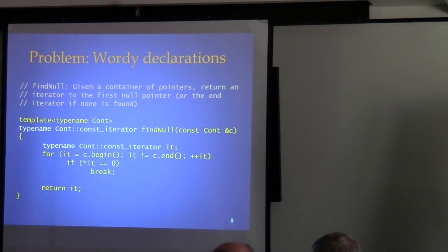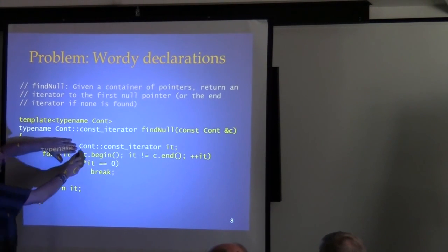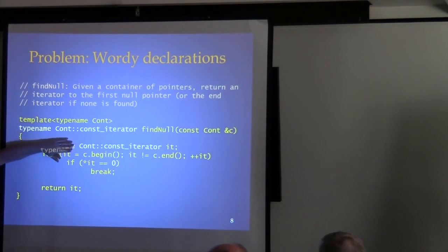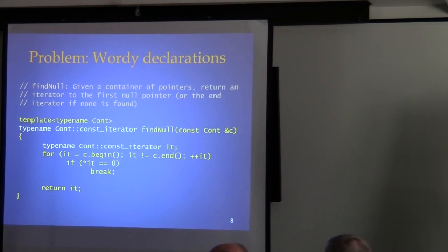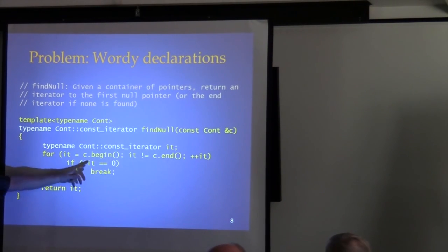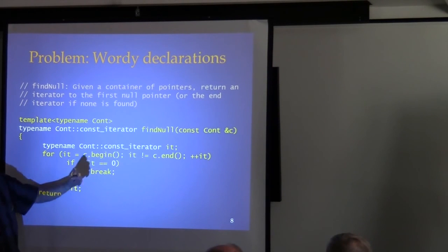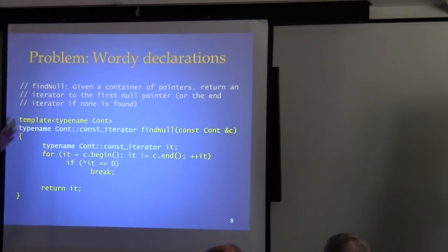Templates are compiled twice — two-phase translation. When the compiler first sees the template source code and then again when it's specialized. On the first pass it doesn't know what the class or member actually is. For years, compilers just ignored the missing typename and figured out what you meant, which was bad — code would stop working when compilers got more conformant. So you have to say typename. We iterate across the container, dereference each iterator, and if we find null we're done; otherwise we return the end iterator.